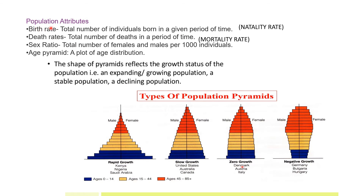The population attributes are: birth rate (total number of individuals born in a given period of time, also known as natality rate), death rate (total number of deaths in a period of time, also known as mortality rate), sex ratio (total number of females and males per thousand individuals), and age pyramid (a plot of age distribution). The lower section of the pyramid contains the 0–14 age group, the middle contains 15–45, and the upper contains 45–85+. The left side contains males and the right side females. The shape of the pyramid reflects the growth status of the population — expanding, stable or declining.